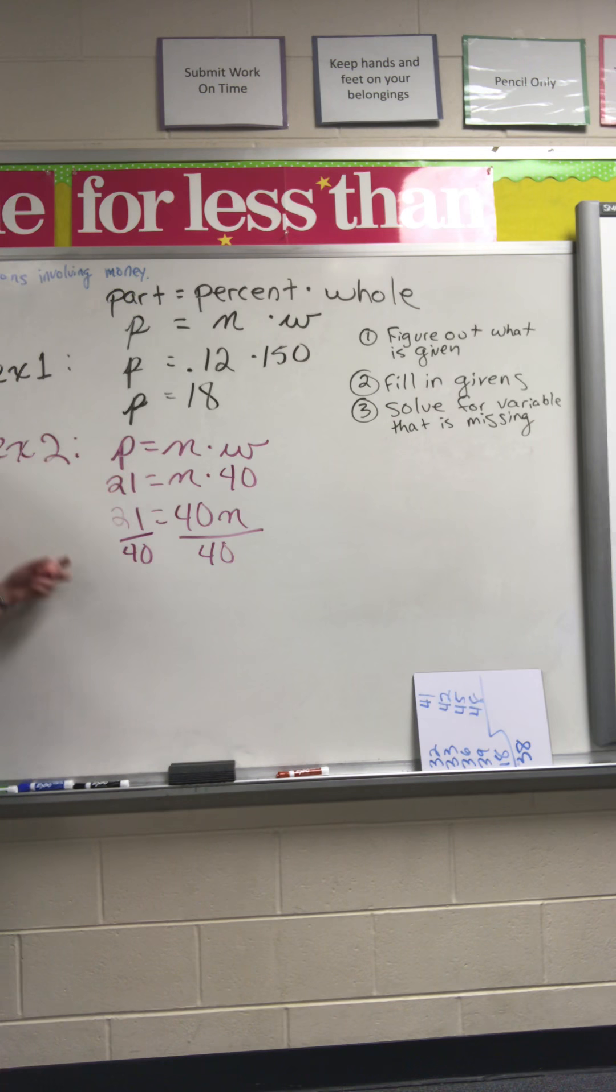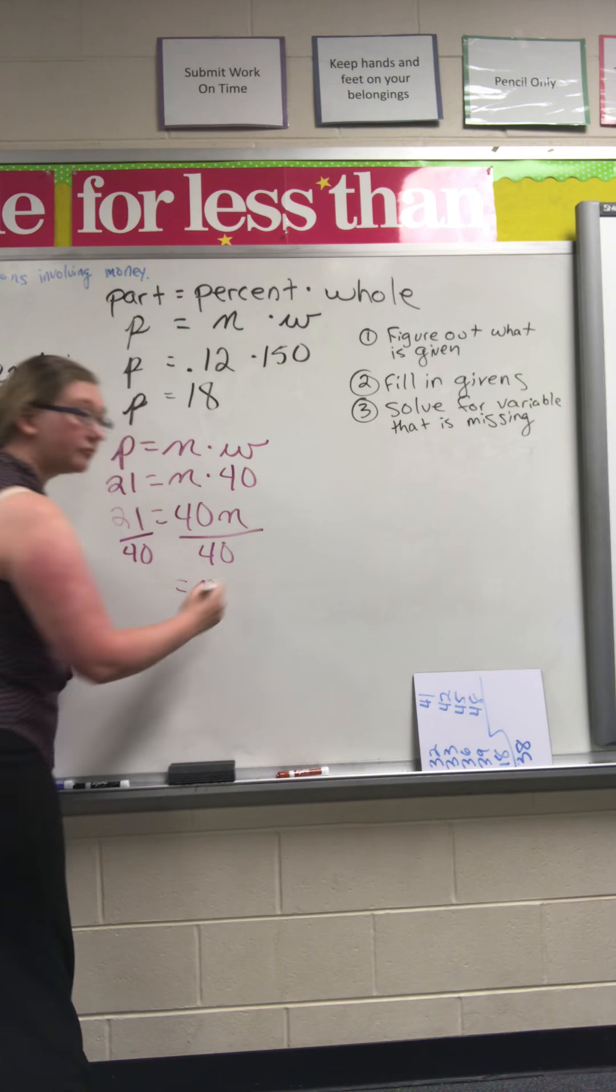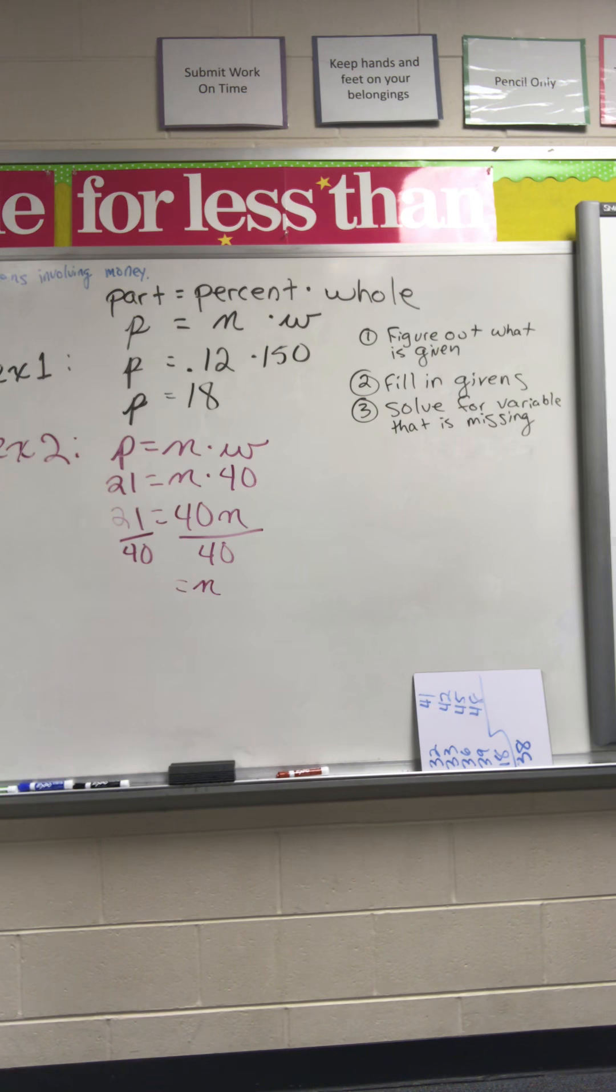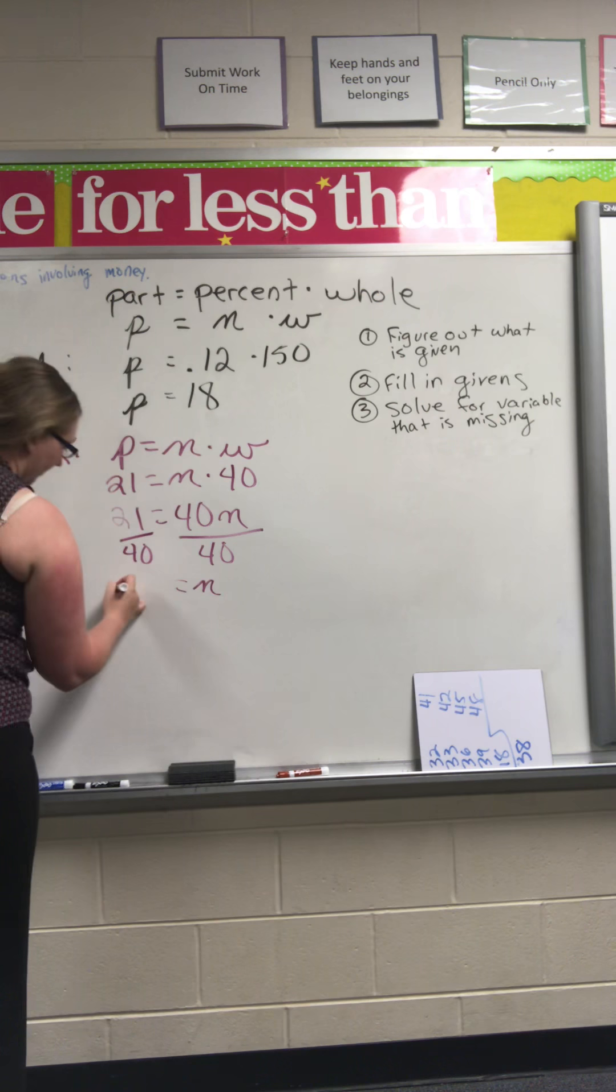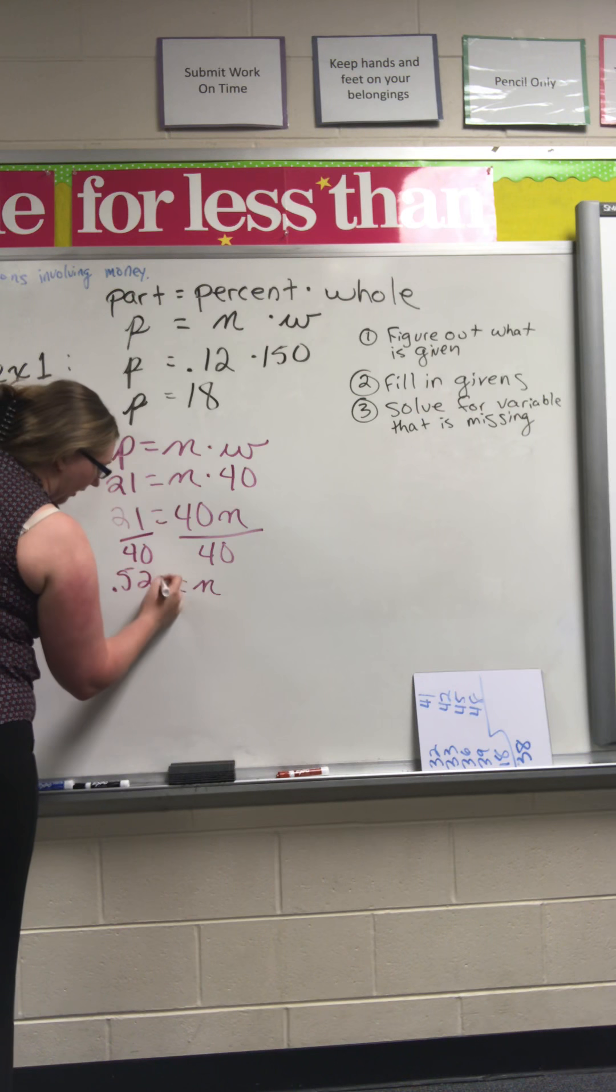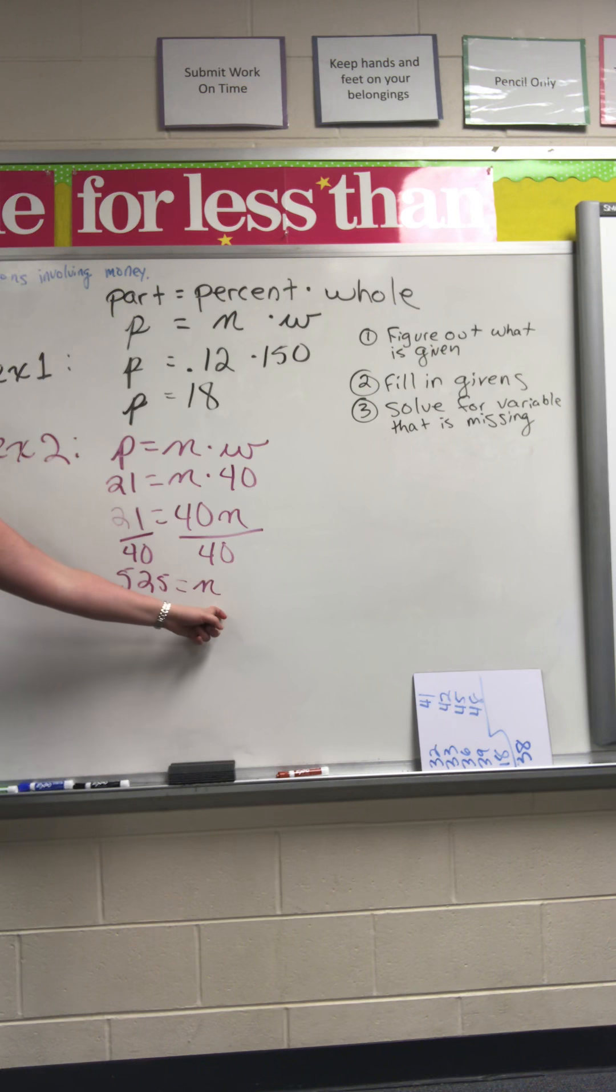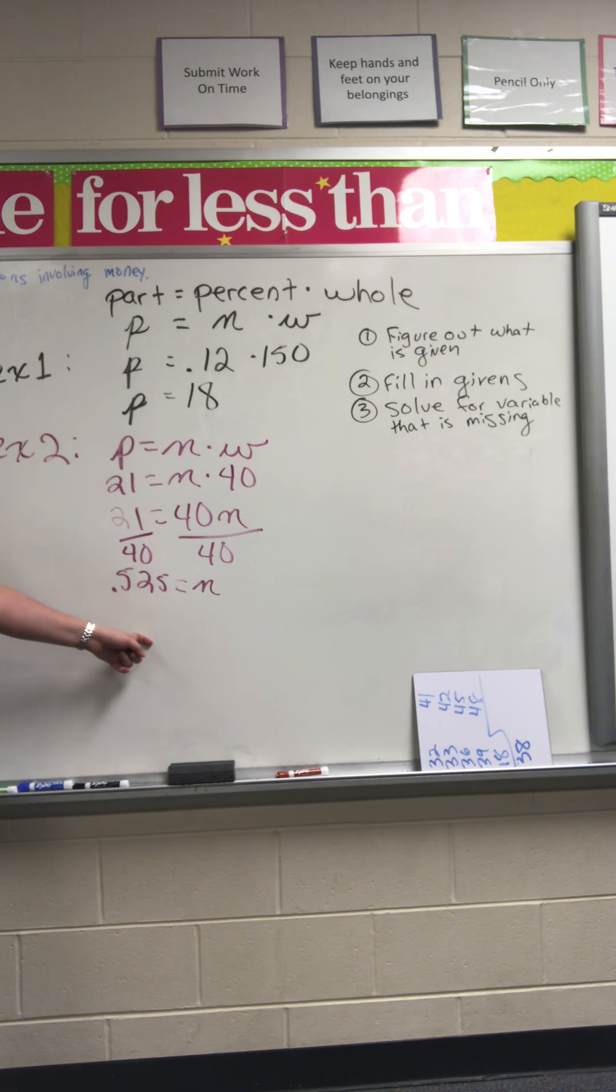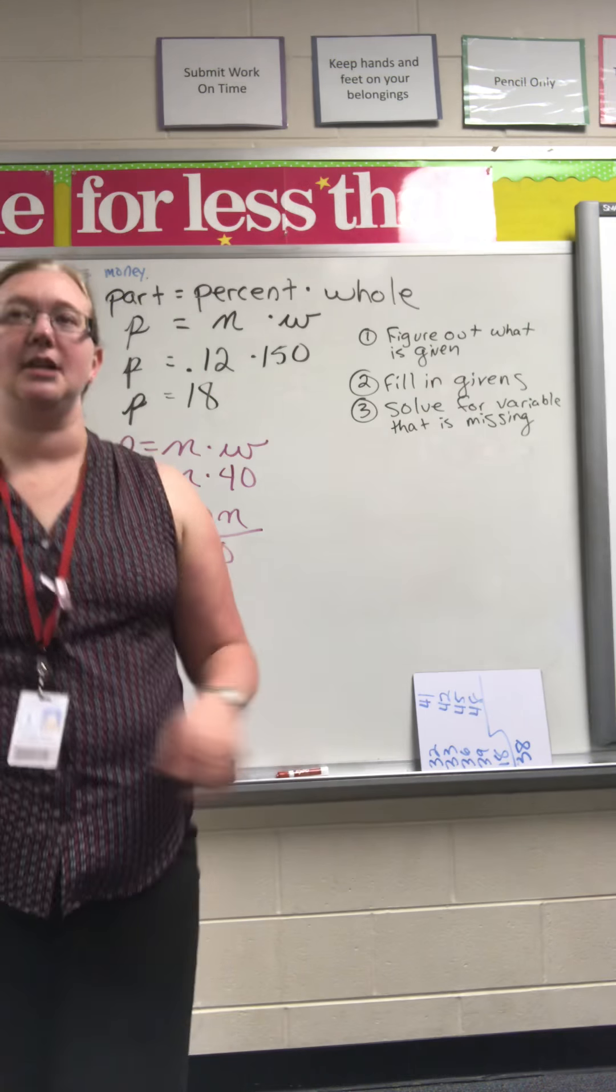What is 21 divided by 40? 0.525. And it tells me that I'm looking for my percentage. Correct? It's 0.525. Is that a percent? No, that's not a percent.